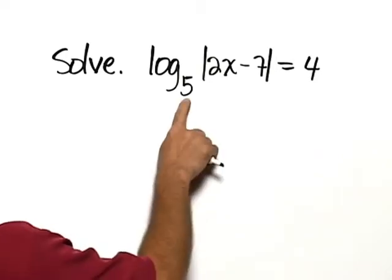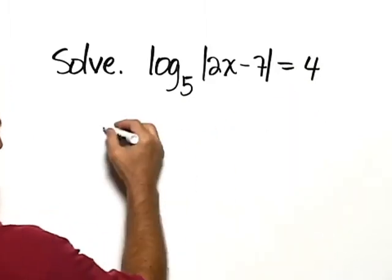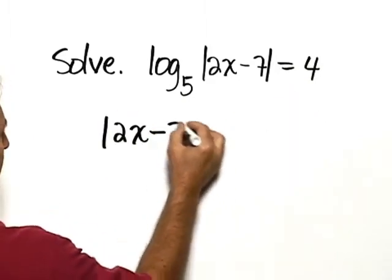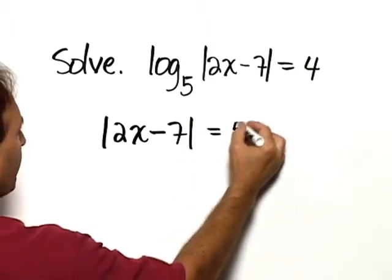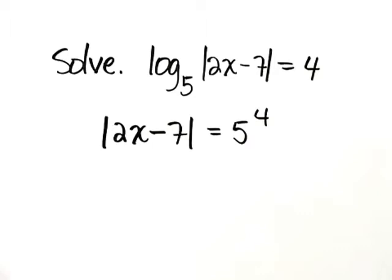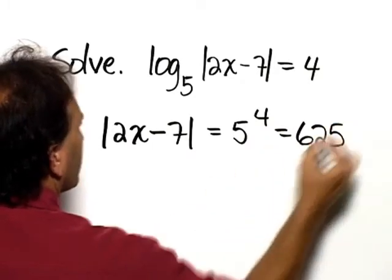Of course, 5 is the base, 4 is the exponent, and therefore the absolute value of 2x minus 7 is equal to 5 raised to the power of 4, which is equal to 625.